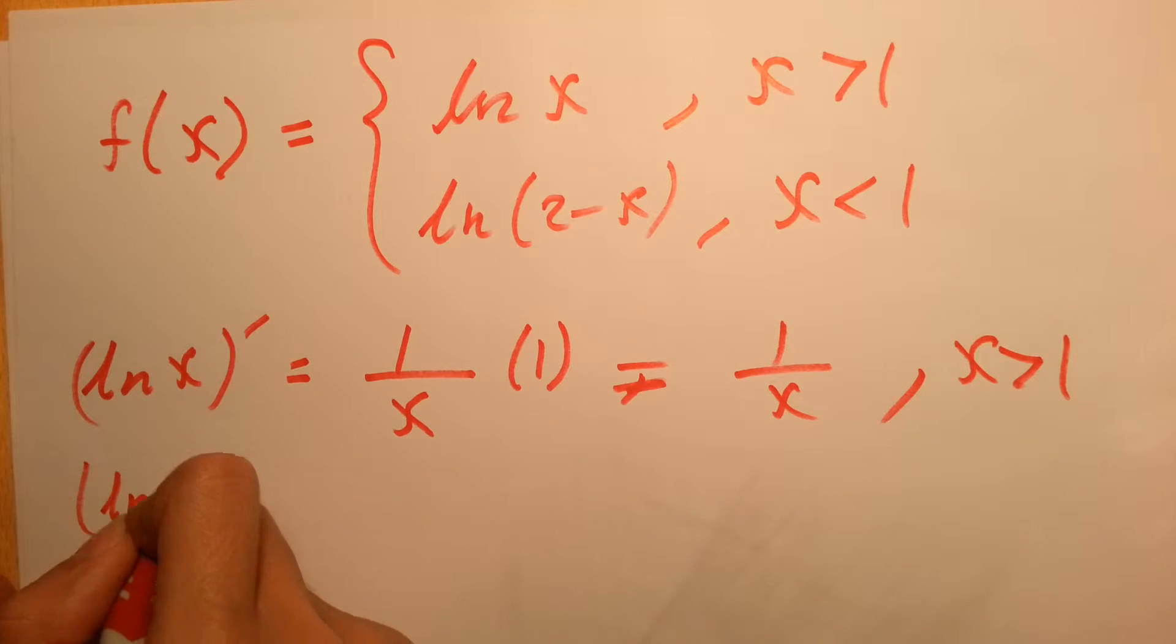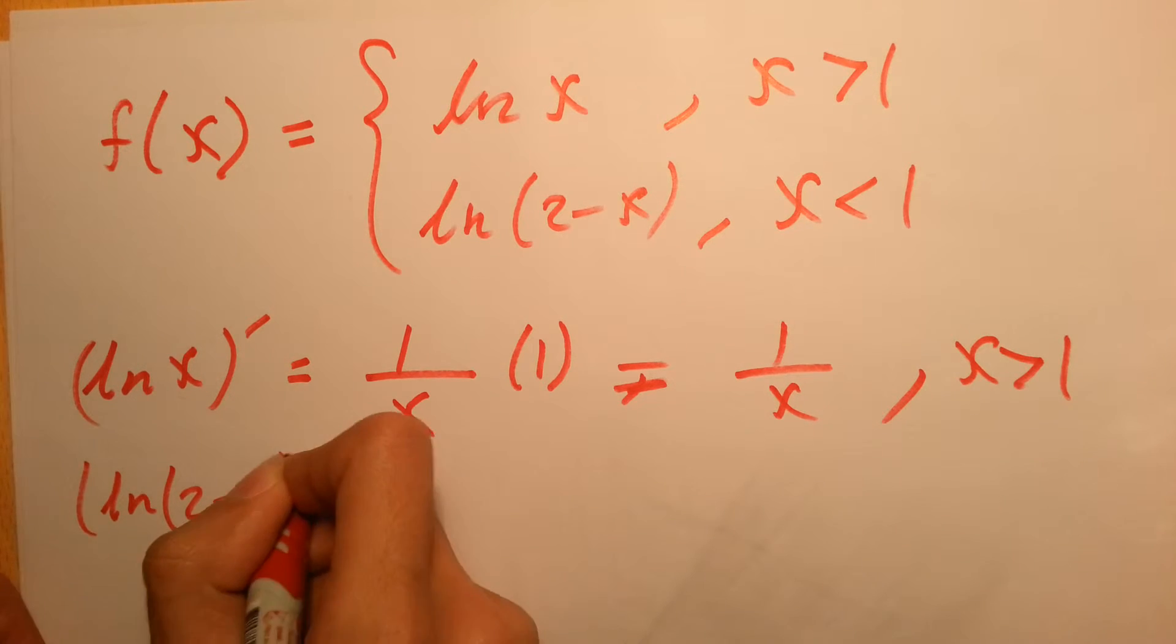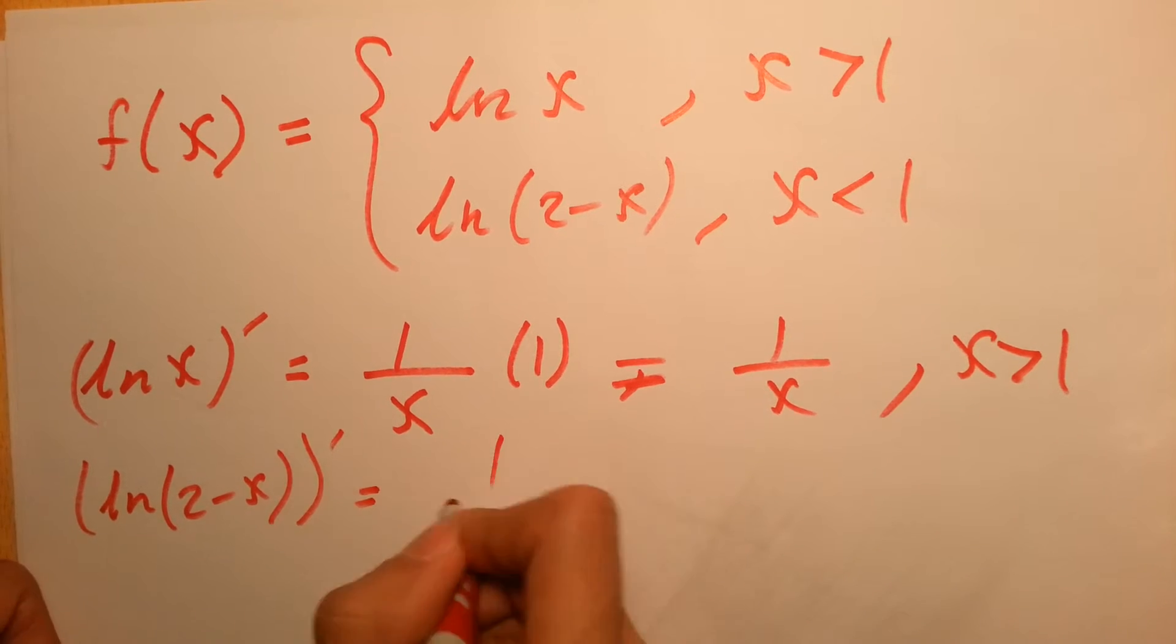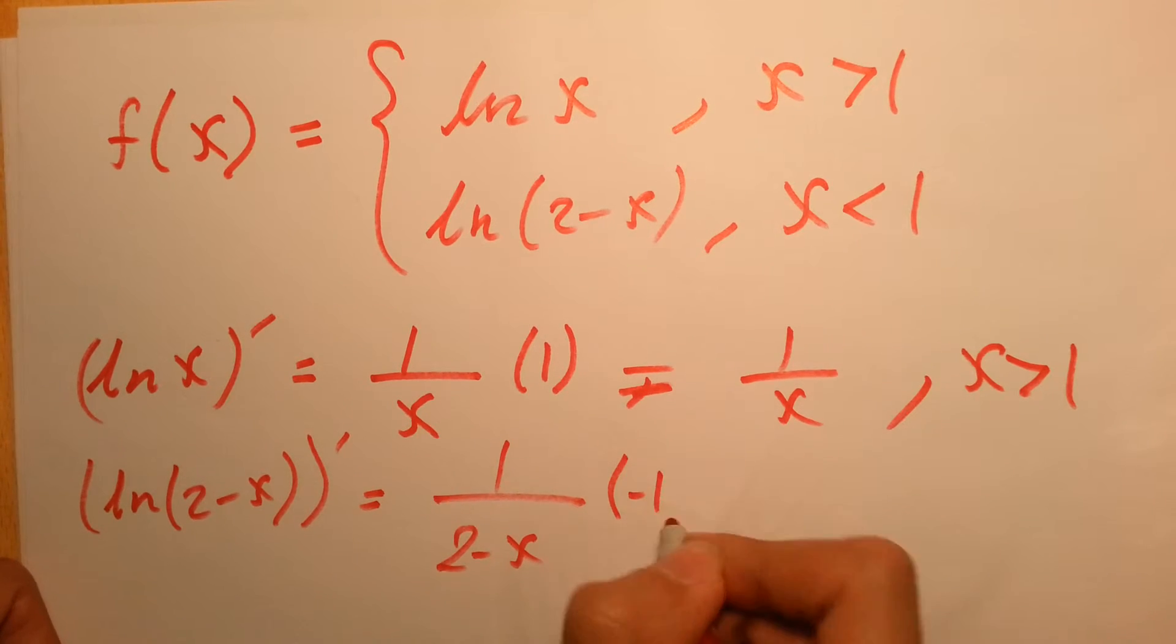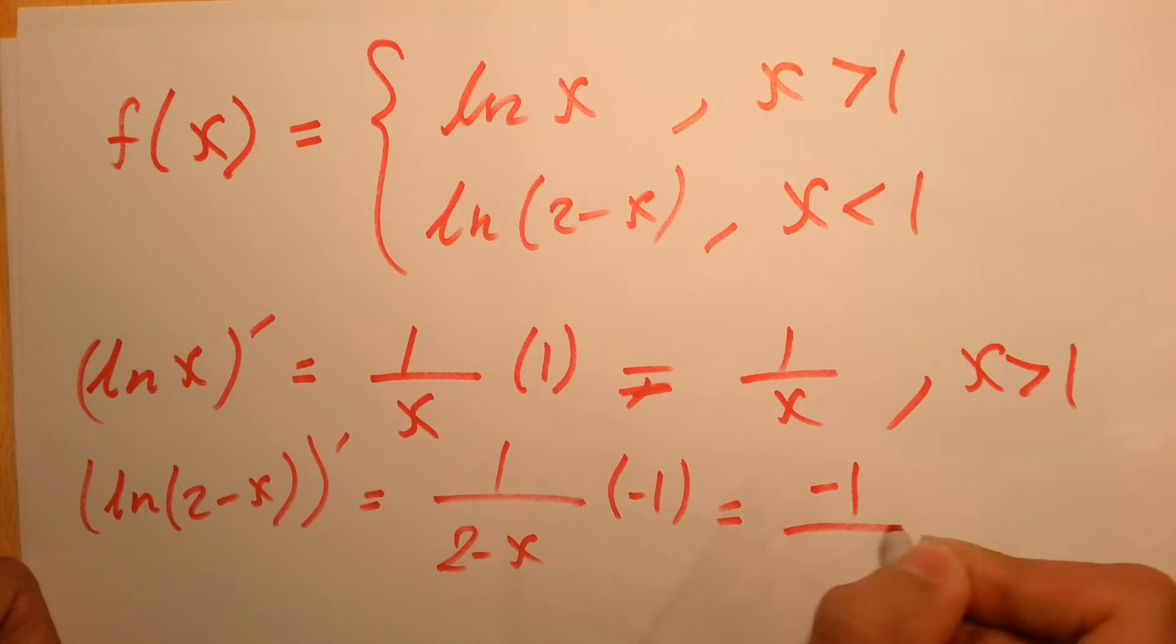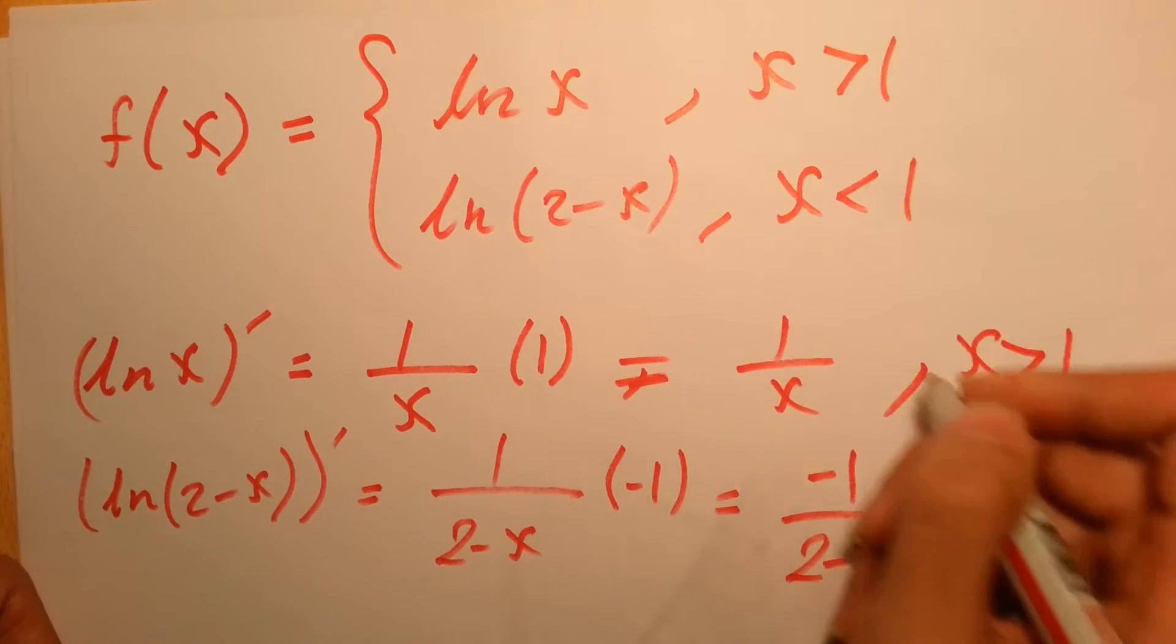The derivative of the second part, which is ln of 2 minus x, will equal 1 over 2 minus x multiplied by minus 1, which equals minus 1 over 2 minus x for x less than 1.